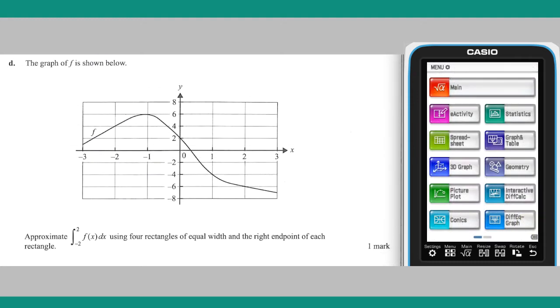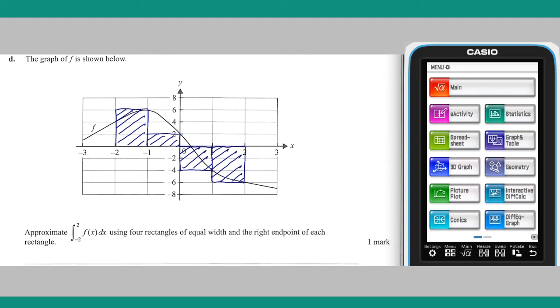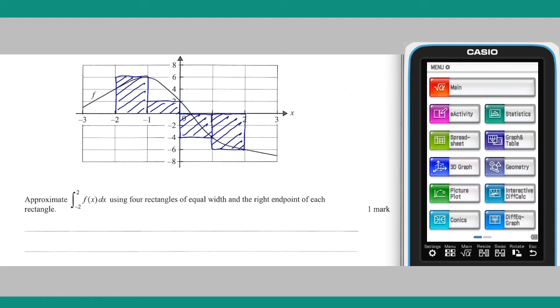Part D: the four rectangles described in Part D look like this. An approximation for the definite integral from negative 2 to 2 of f of x can be found by summing the signed area of these rectangles. Using the graphical information provided, this sum is 6 plus 2 plus minus 4 plus minus 6. This gives an approximation of minus 2.